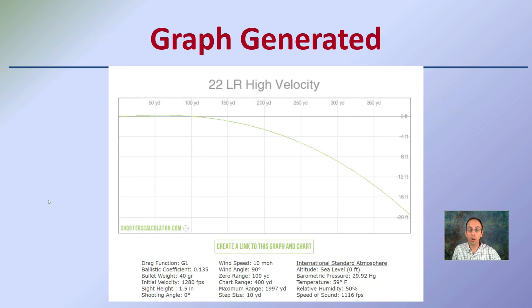This is just an example of the graph generated based on that data. It's a 22, we can see that kind of parabola-like angle of travel here, path of travel.